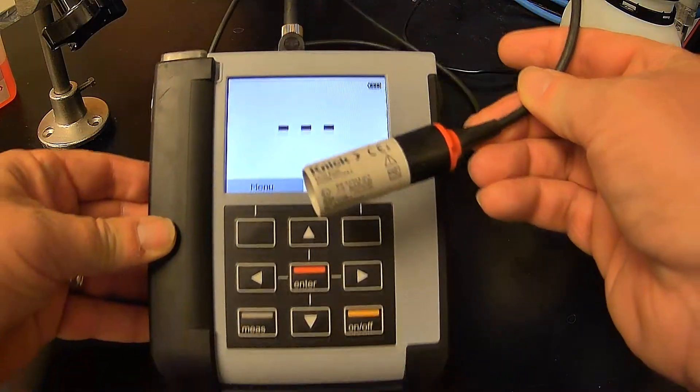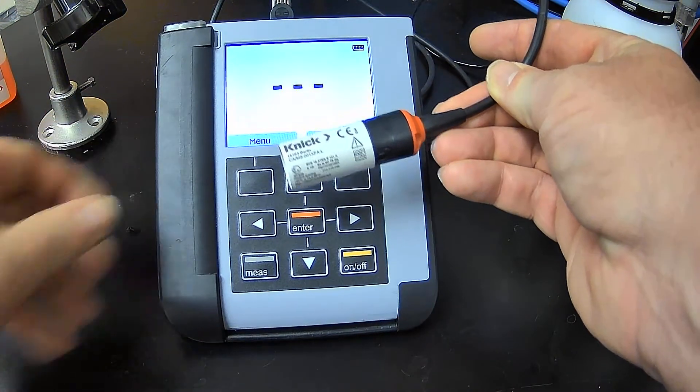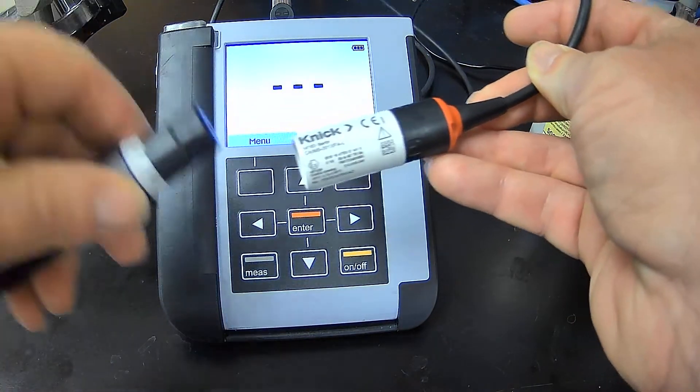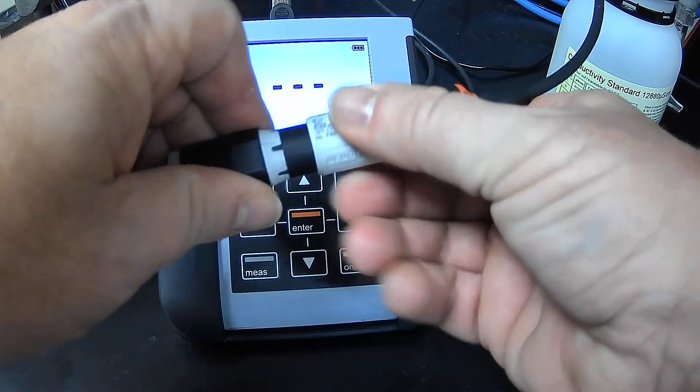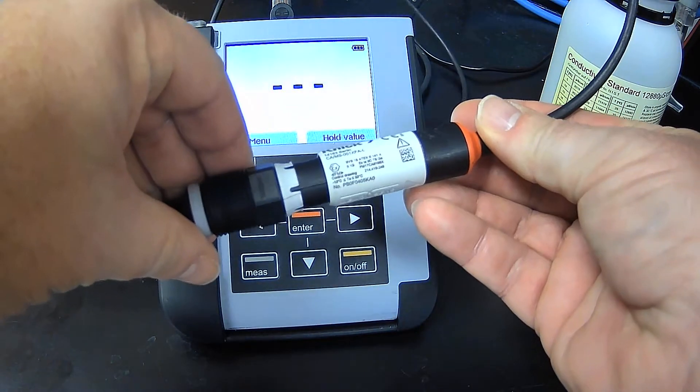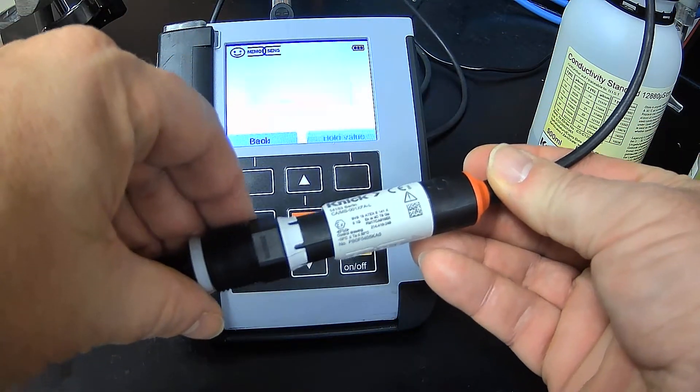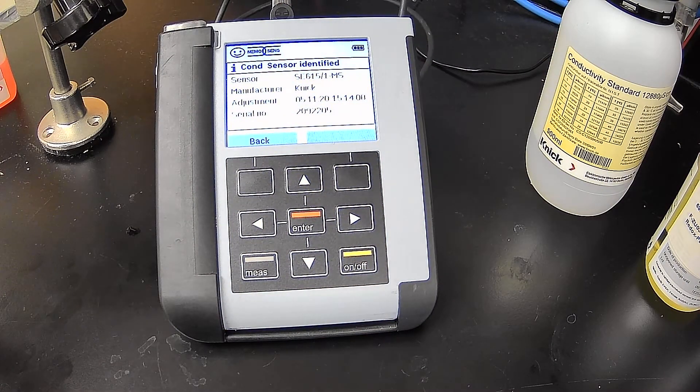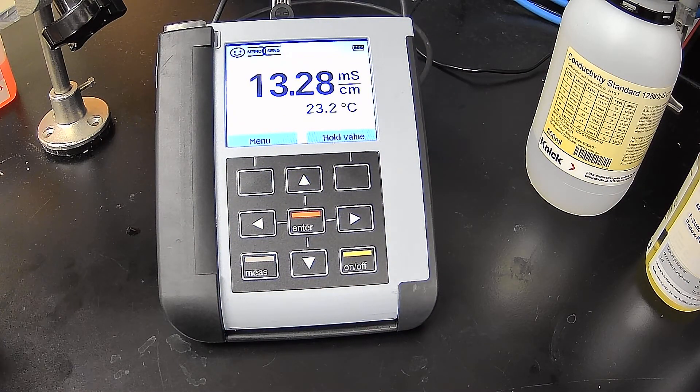So I'm going to take the 615 and lock that into place. And then what you see here is it's identified the sensor because it is a digital electrode.